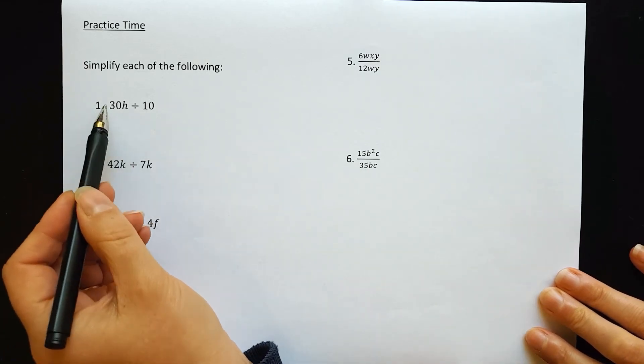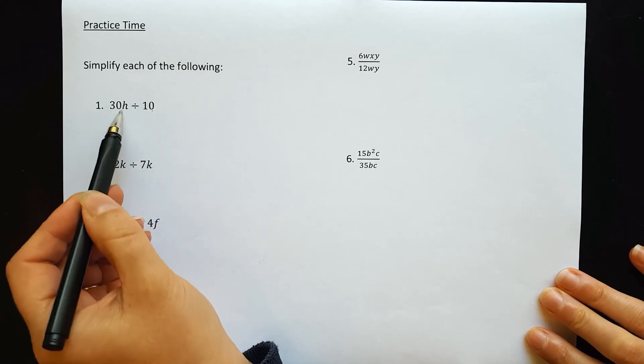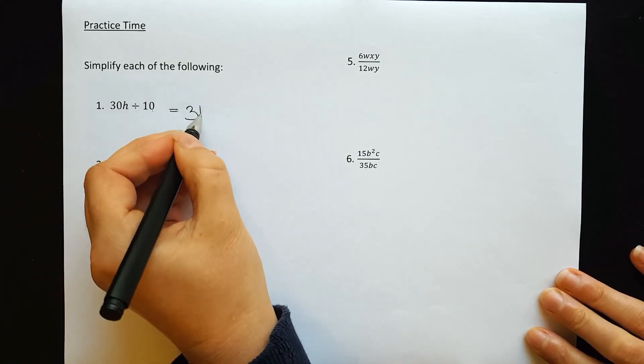Question 1: 30h divided by 10. 30 divided by 10 is 3, and the h will still be there. So the answer is 3h.